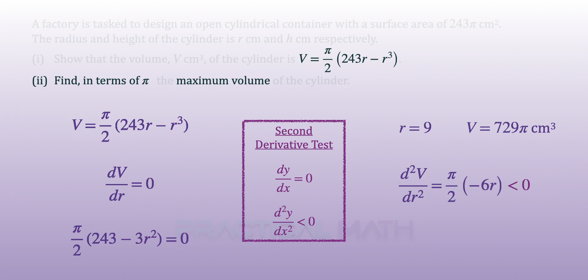r is a radius and the radius must be positive, so our second derivative of the V equation must be negative. With that, we conclude the maximum volume is 729π cm³.